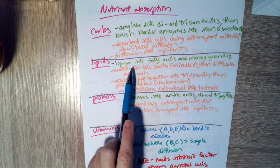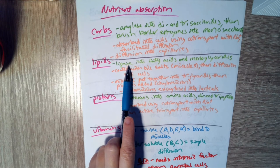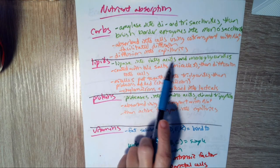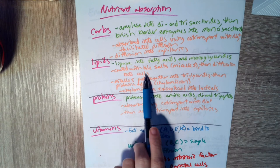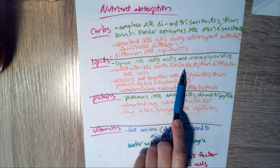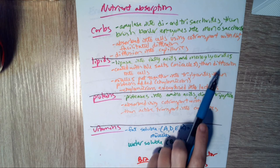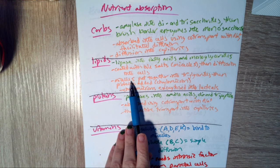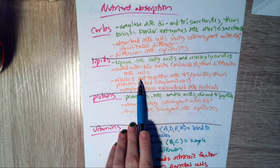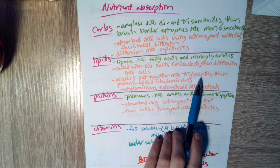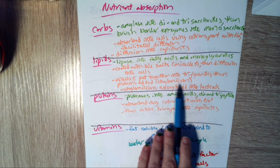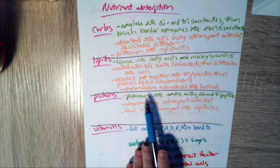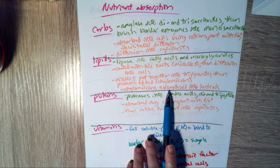For lipids, lipases from pancreatic juice break the lipids into fatty acids and monoglycerides. Bile covers the fatty acids and the monoglycerides to form micelles, which can then diffuse into the cells. Then you put those fatty acids and monoglycerides back together into triglycerides. Cover them with a protein coating, which is now called a chylomicron. And then we exocytose the chylomicron into the lacteals.